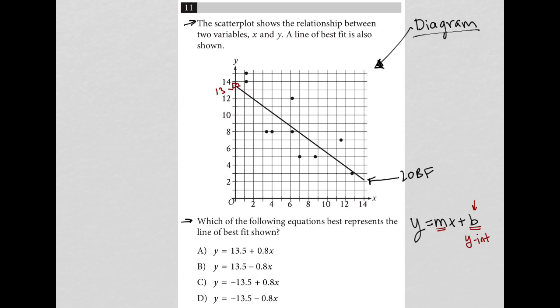So I go to my answer choices and I see that A and B have 13 and a half as the Y-intercept, but C and D have negative 13 and a half. So C and D are gone for that reason.